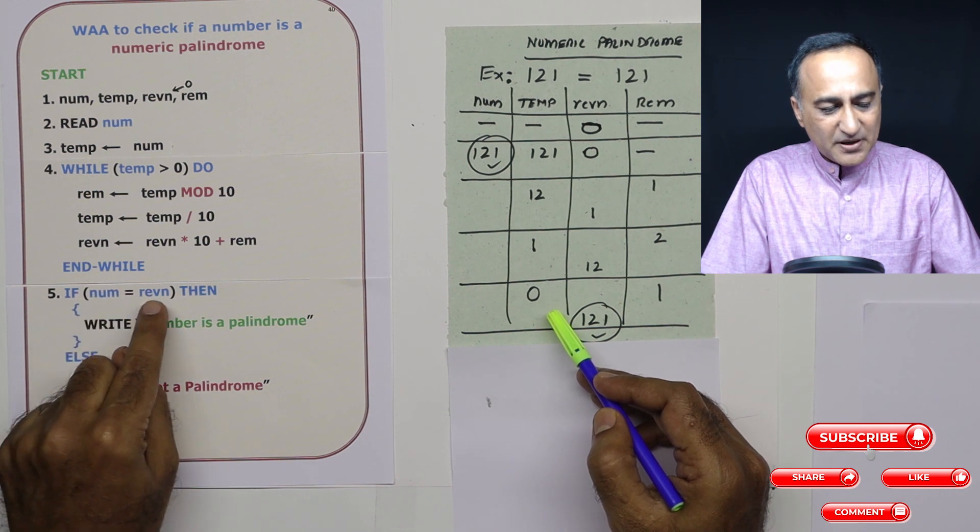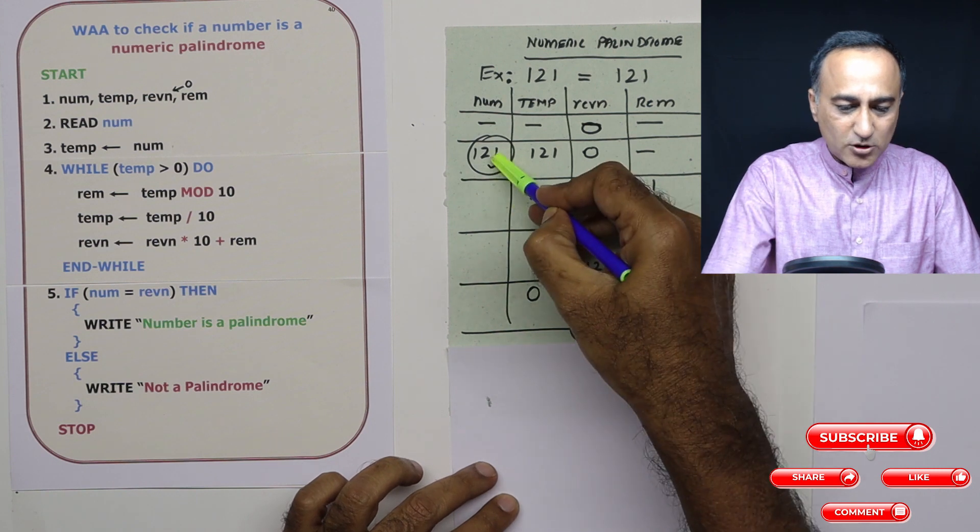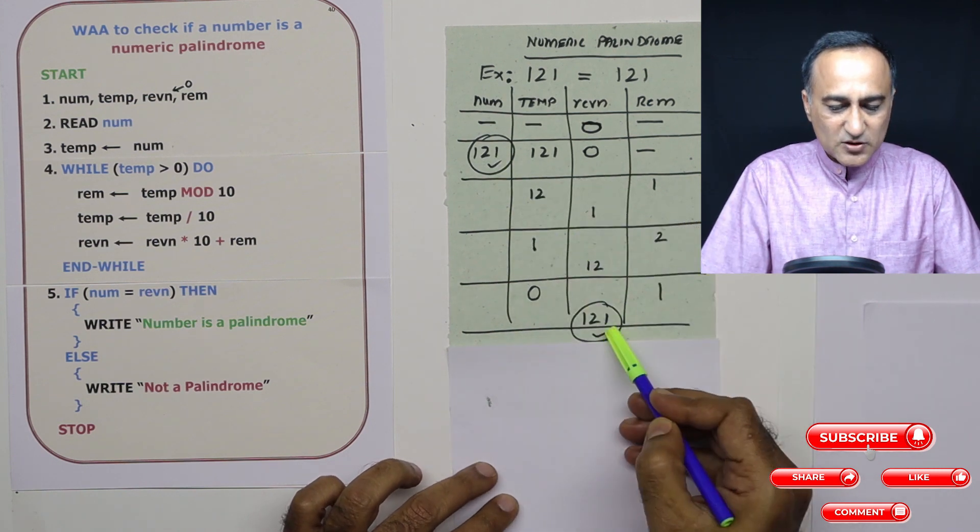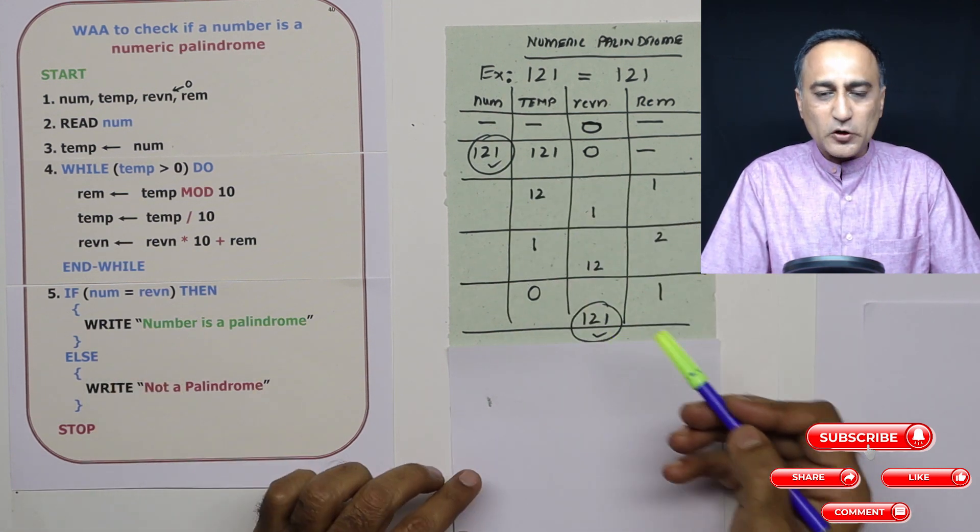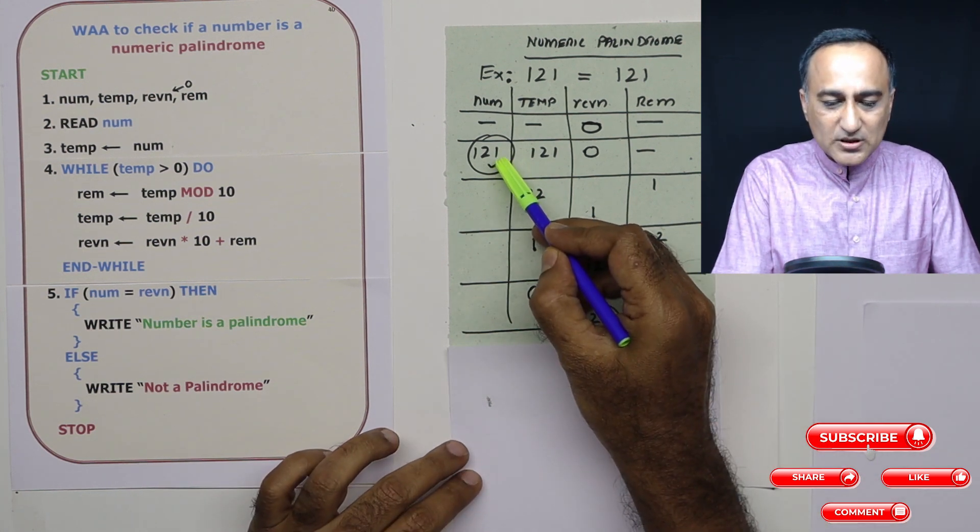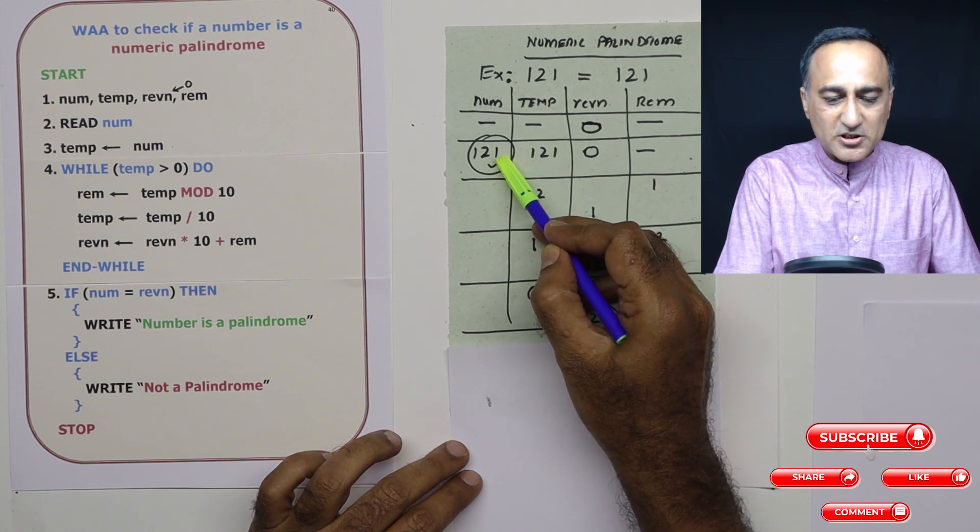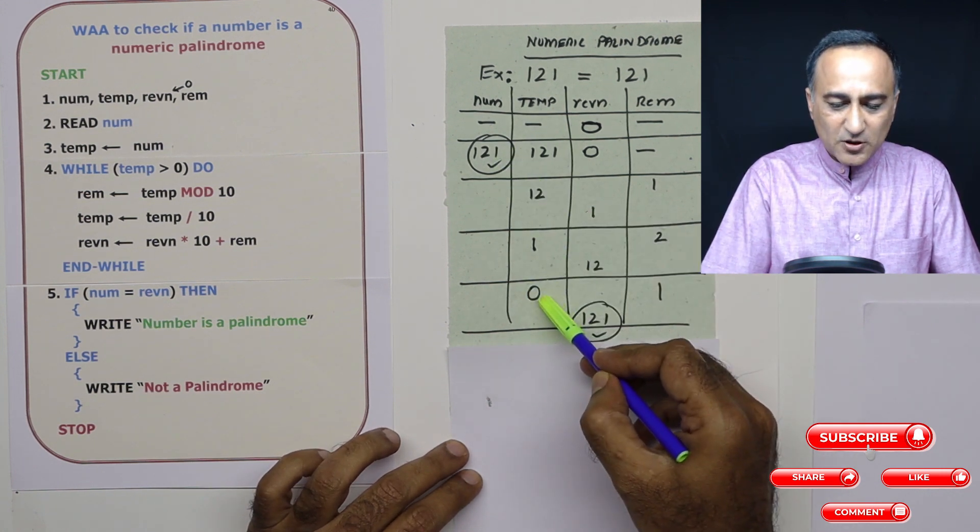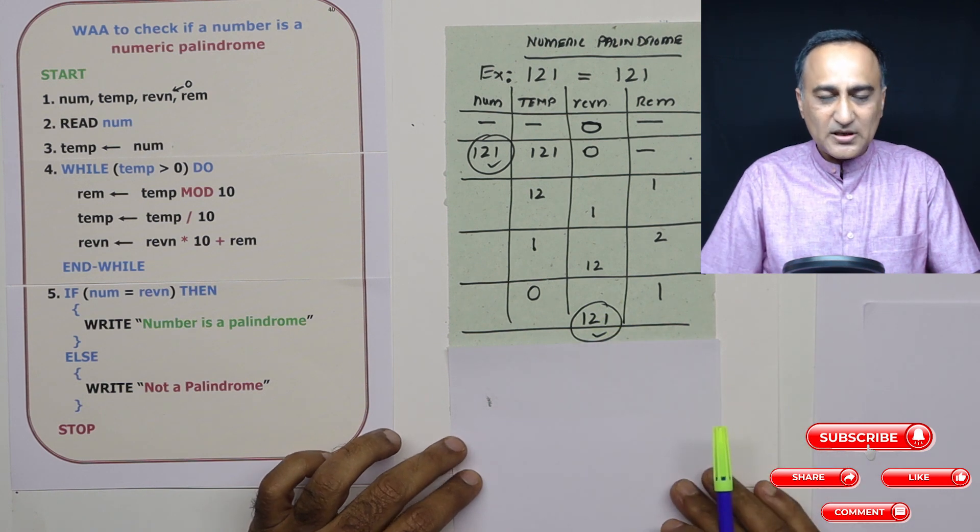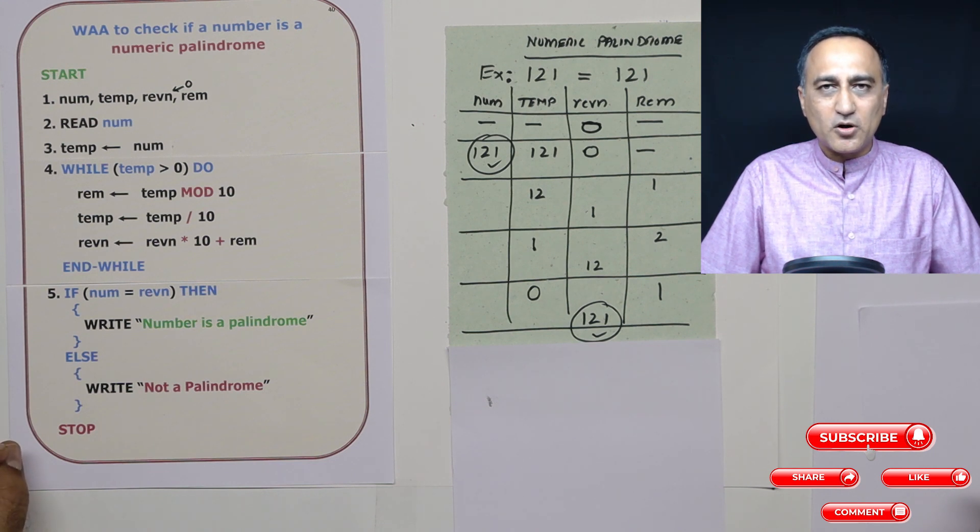If number is equal to reverse number—now 121 is the reverse number. Is it equal to the original number? Yes, it is. So 121 is an example of a numeric palindrome. Now you should be clear why I used temp in place of the original number. If I used the original number, it would have become zero and would never compare correctly with reverse of a number. So this should have given you a really good idea of how to find out if a given input number is a numeric palindrome or not.